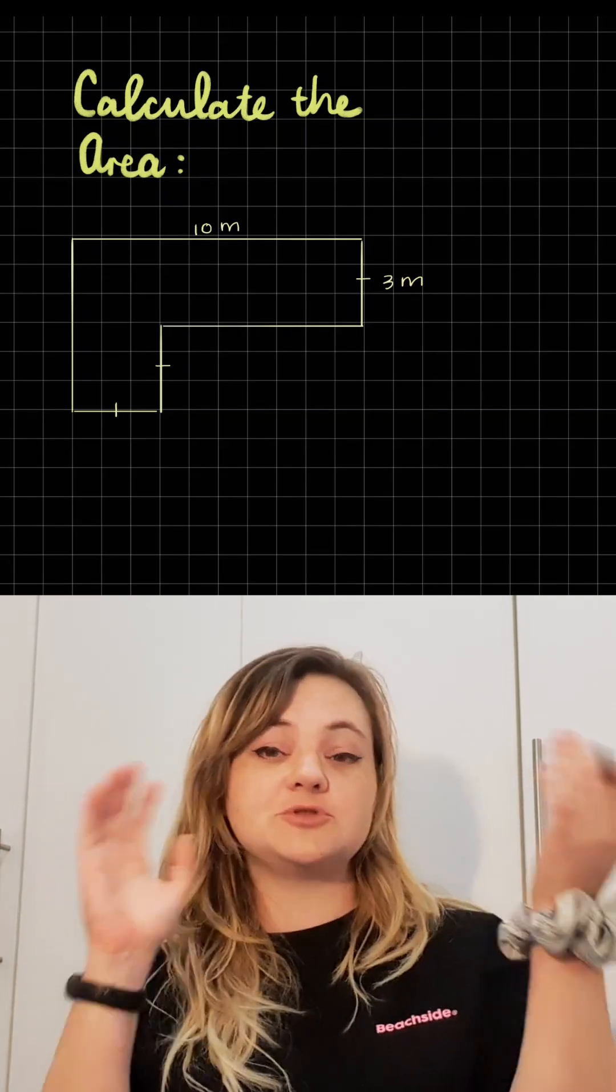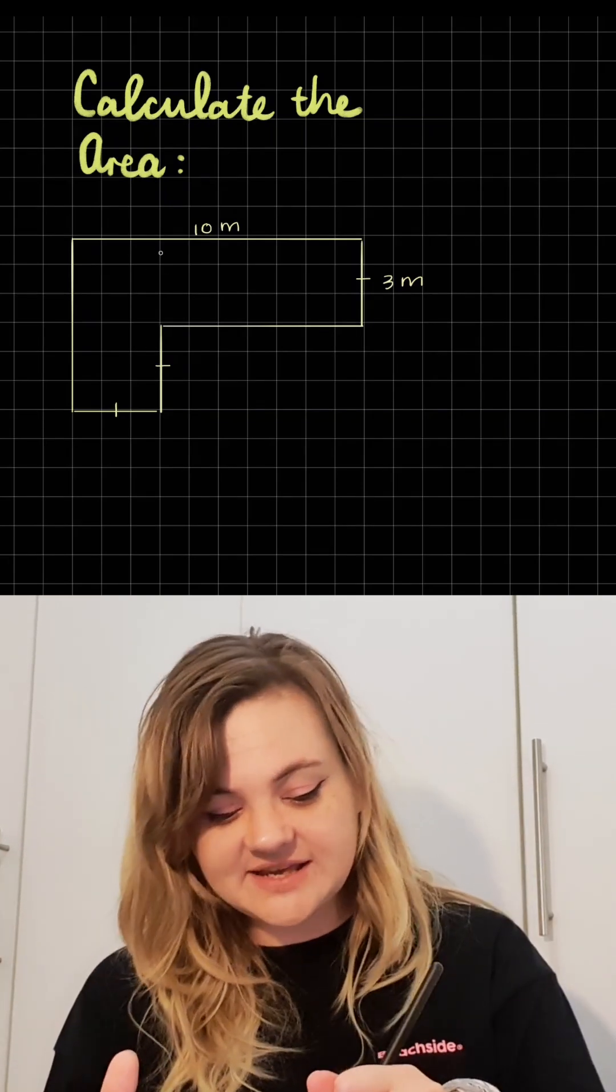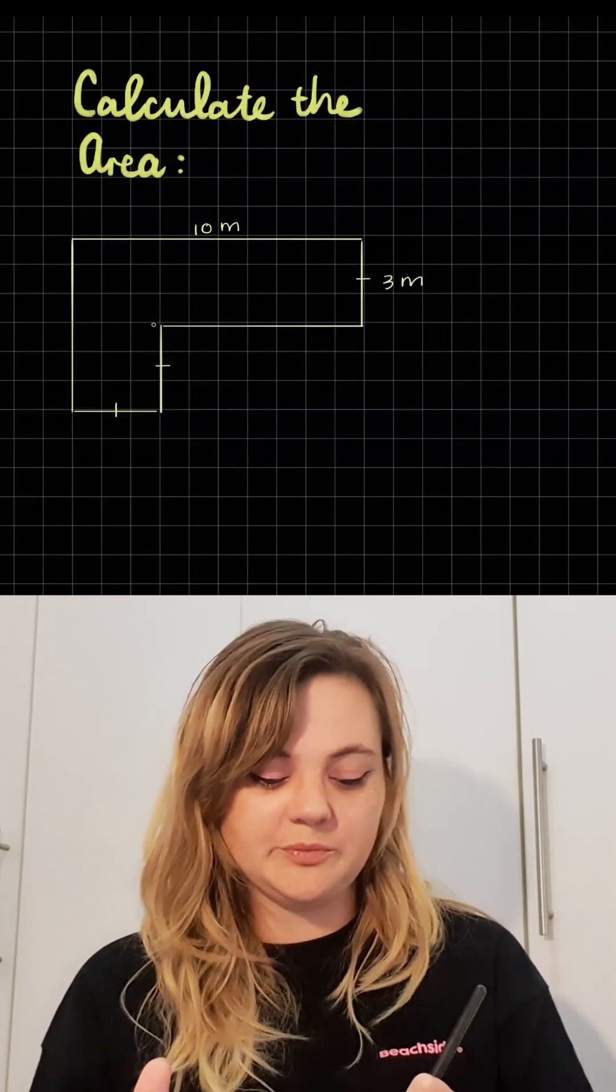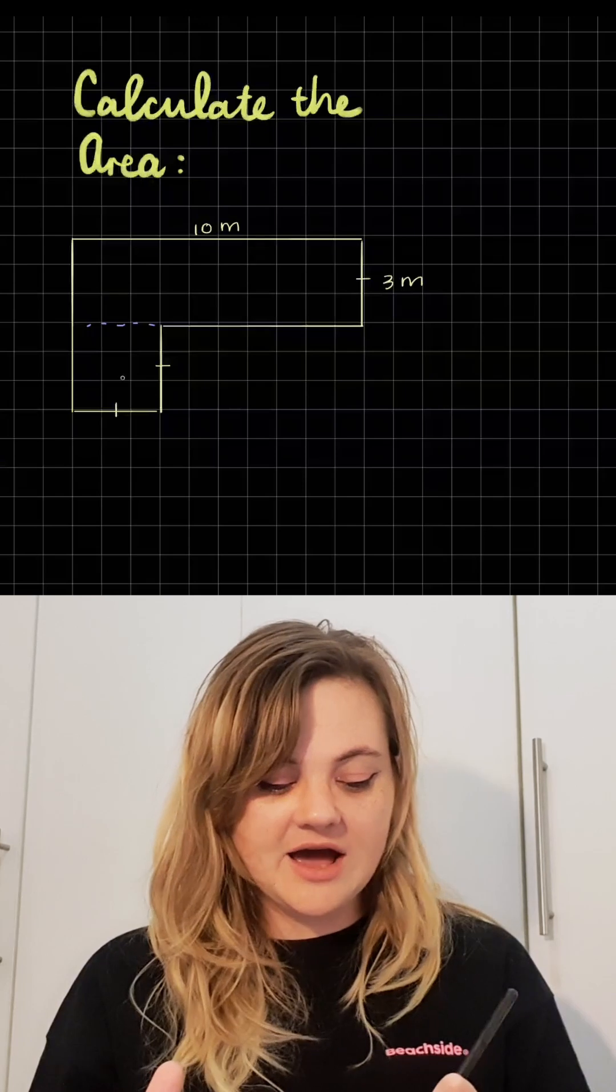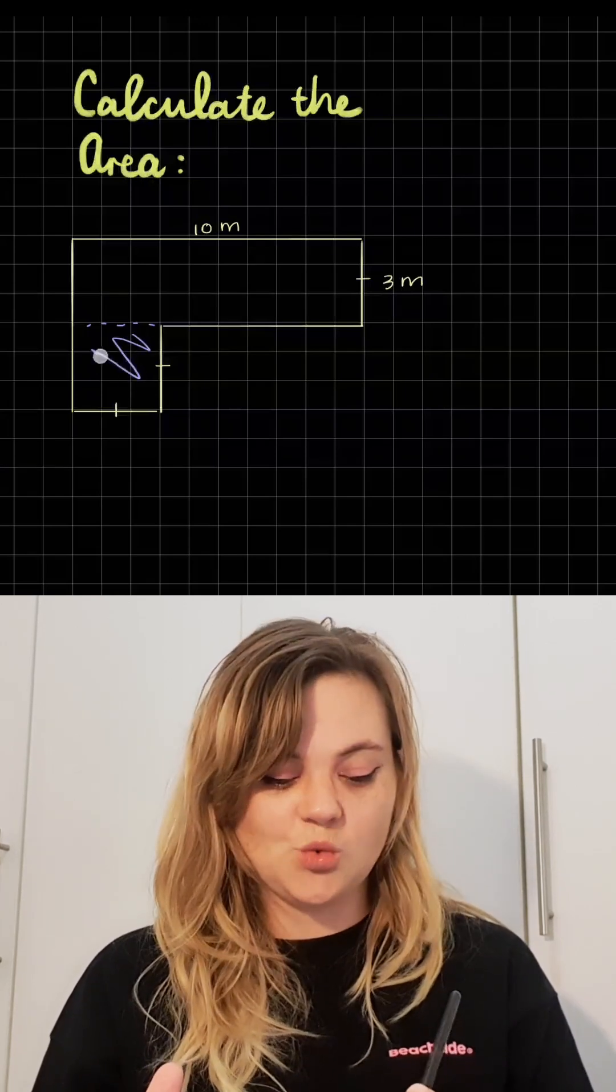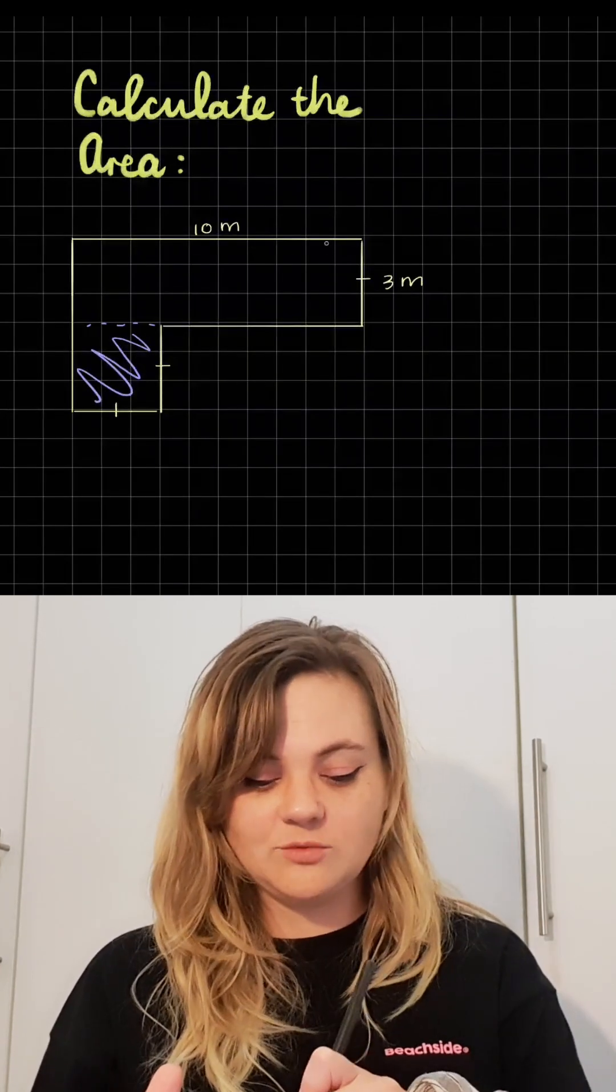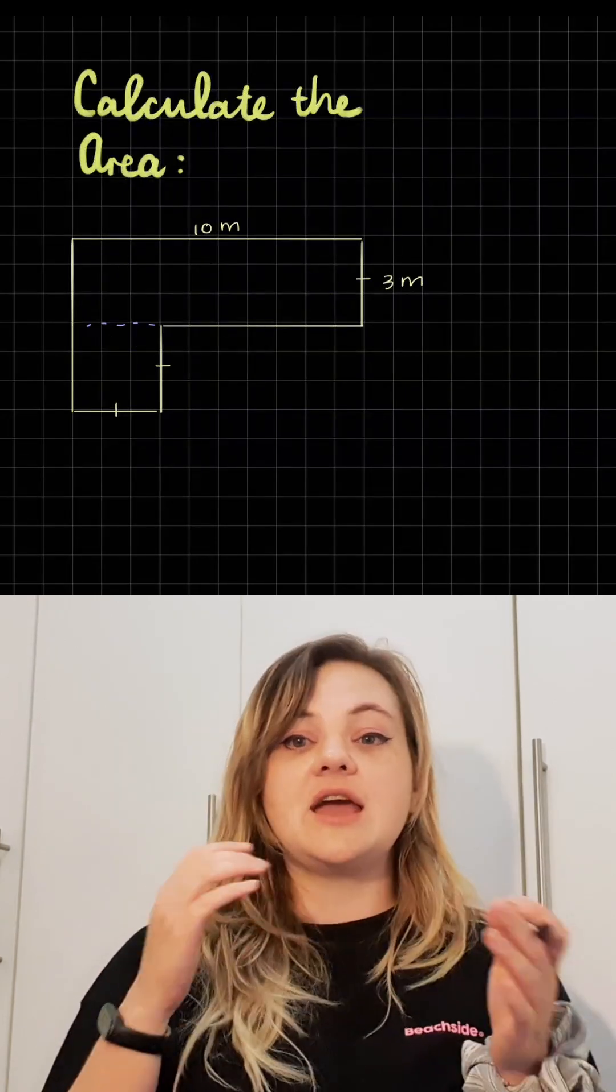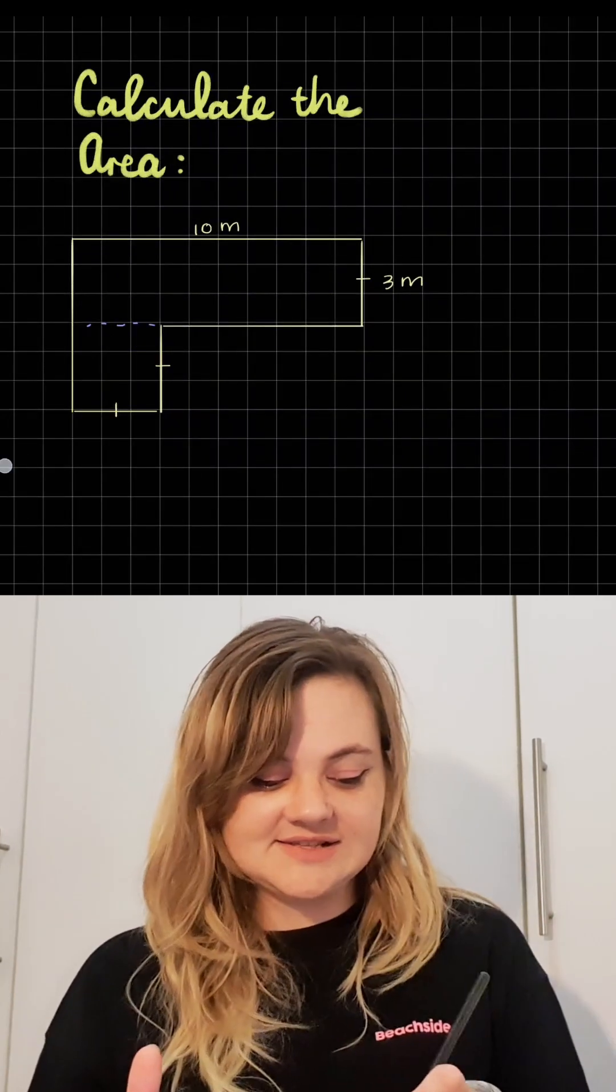In this case, we can break the shape up here or we can choose to break it here. Now we are left with a square over here and we have a rectangle over here. So we can calculate the area of both of those shapes and then add them together.